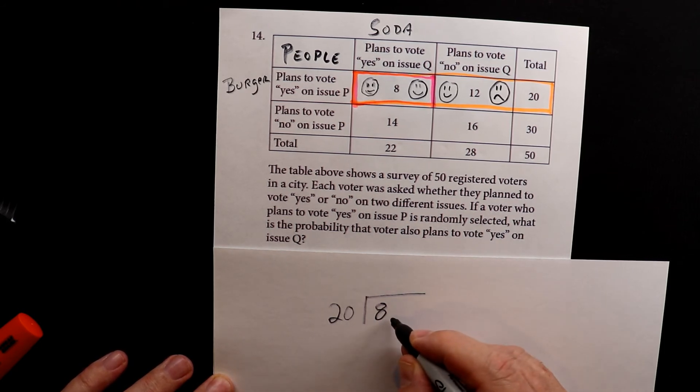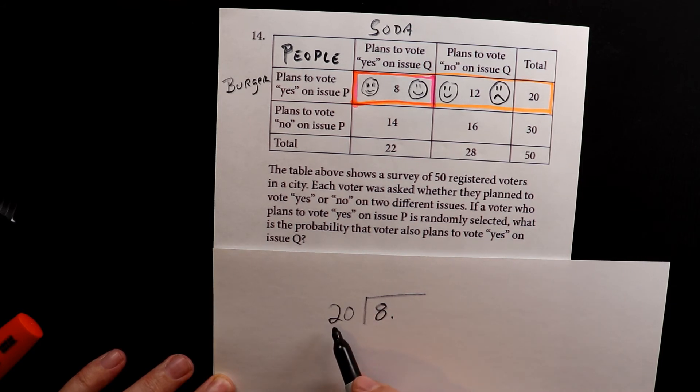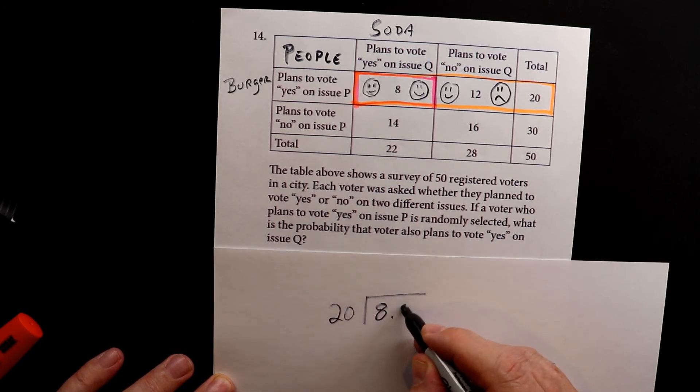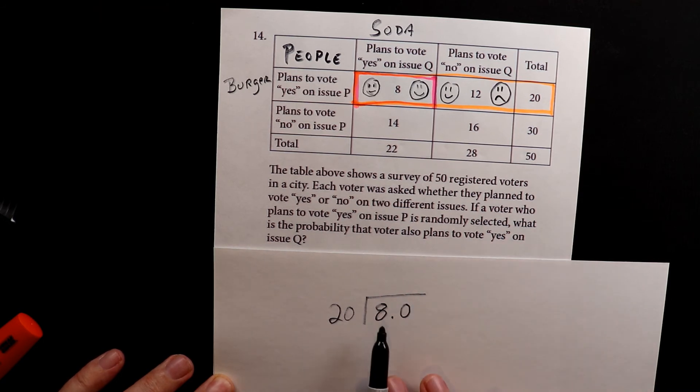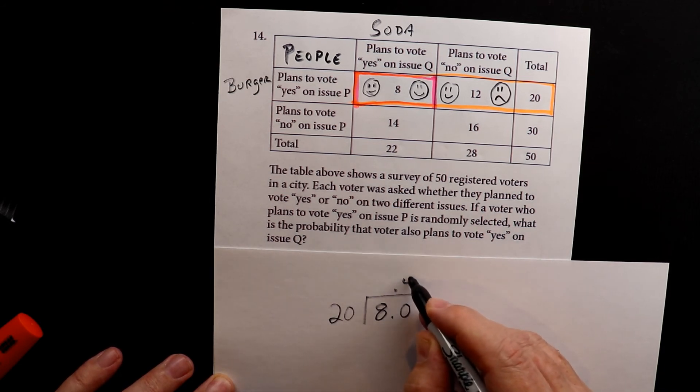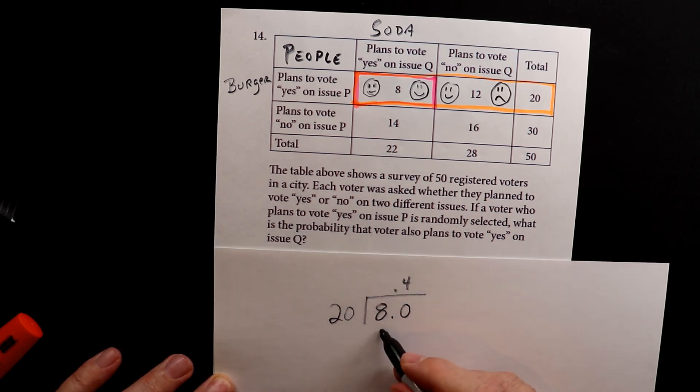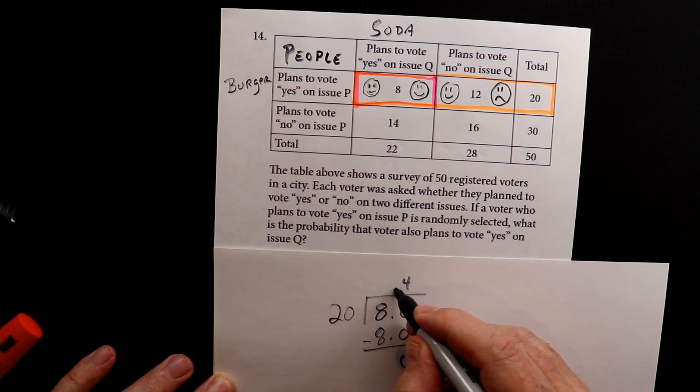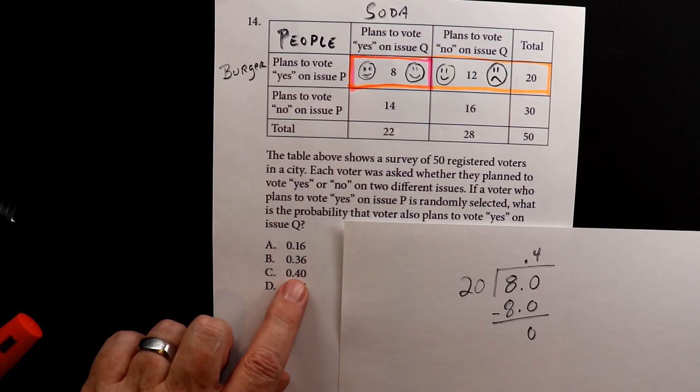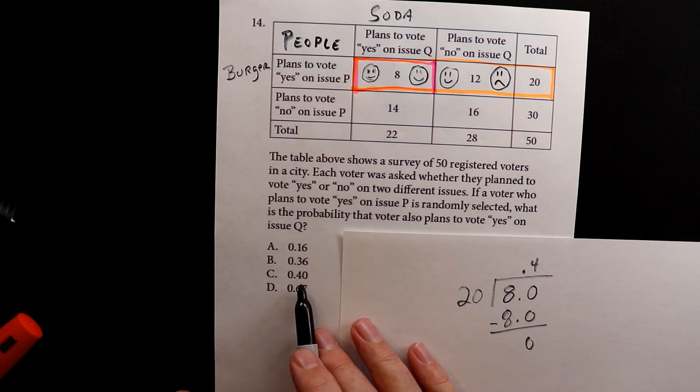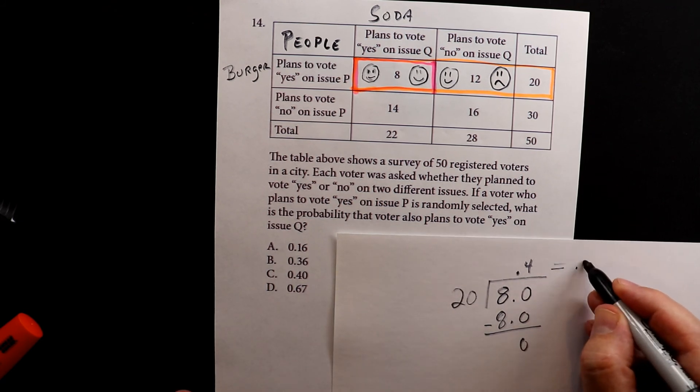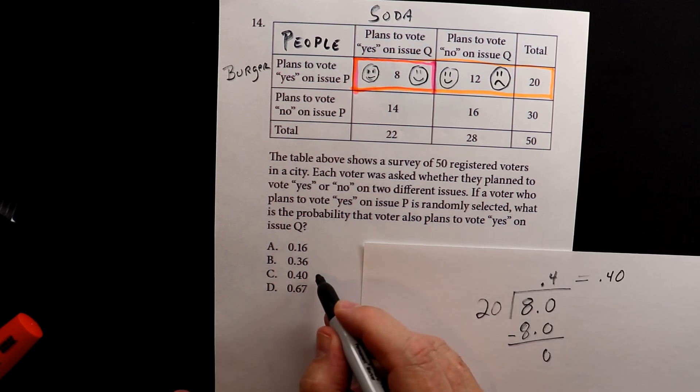So now we're just going to do the straight division. Obviously as 20 is bigger than 8, it's going to be less than 1 because you can never have a probability greater than 1. So watch this. 20 goes into 8. I'm going to bring up my decimal 4 times. 4 times 20 is 80. I remember my decimals. I subtract 8 from 8, leaving me with nothing. So I have 0.4. Now, we don't have just 0.4 for the probability. We have 0.40, which is equal. So this is your final answer.